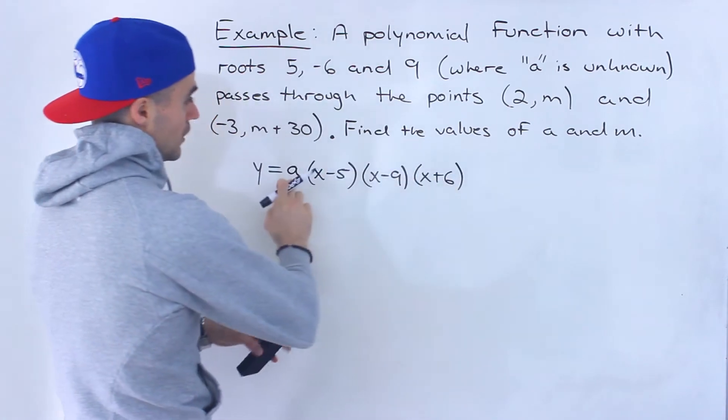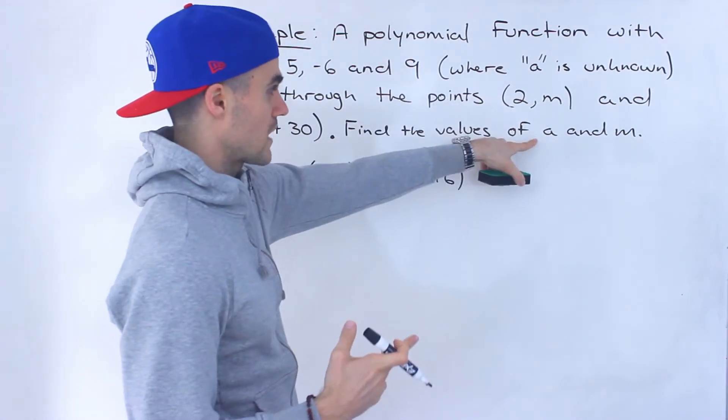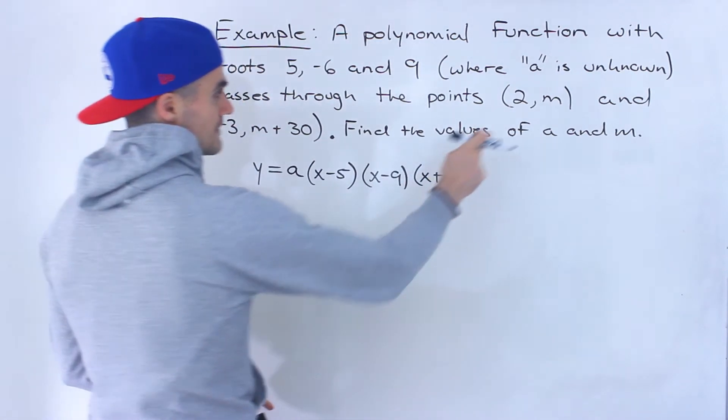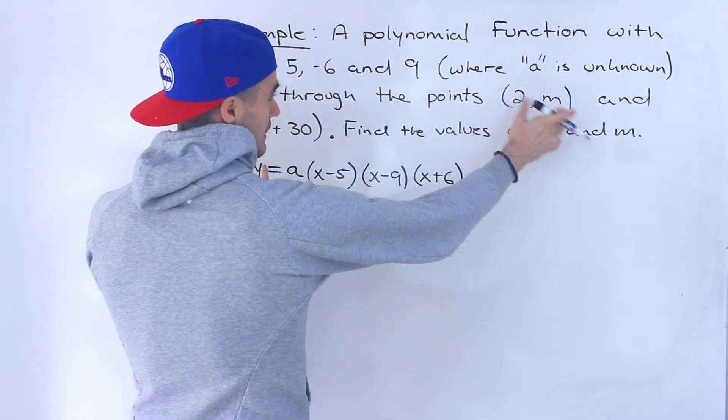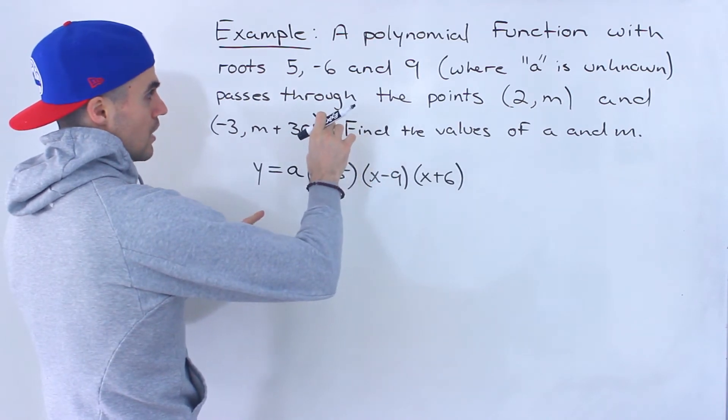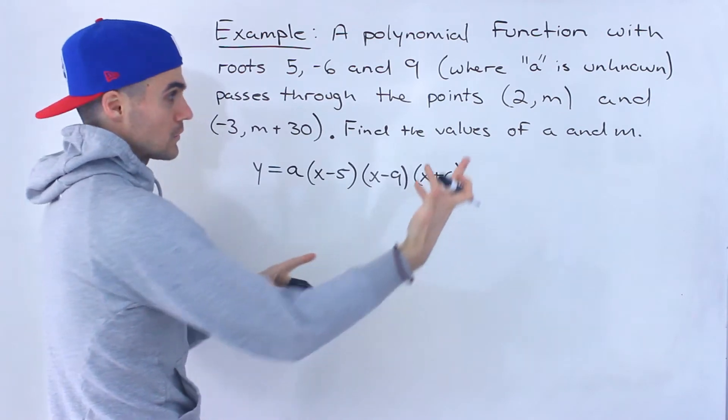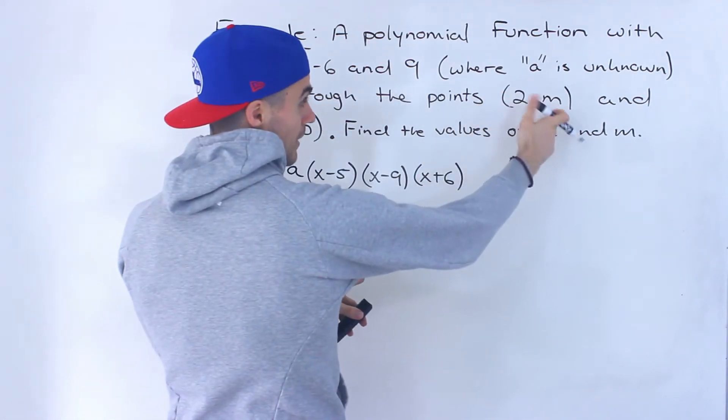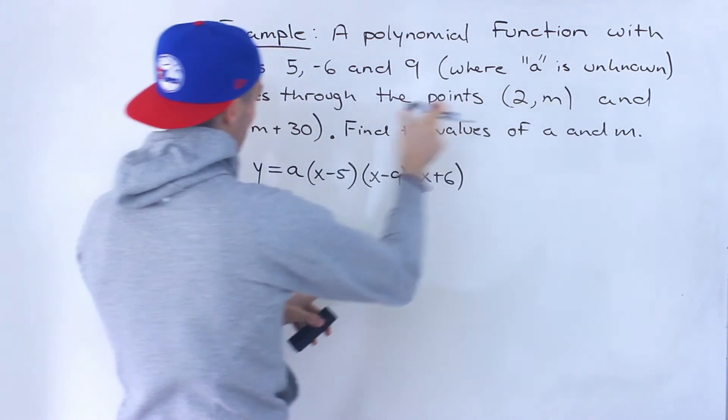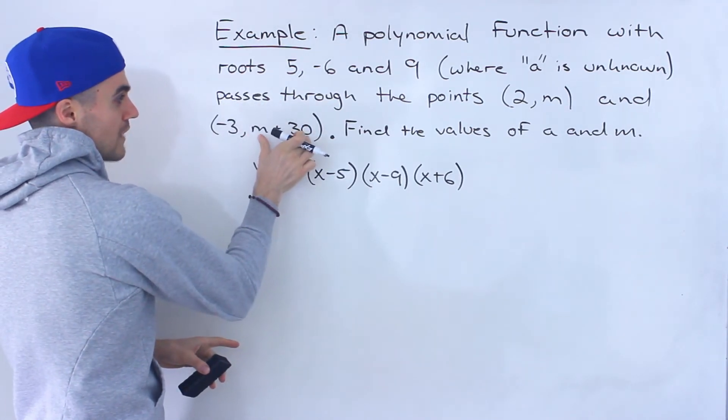So this is our polynomial here. We don't know what the A value is in front. It's unknown. That's one of the values we're actually finding. And we also have to find this M value. And notice that this M value is part of the representation of the two Y values for the two points we're working with. So we have this point (2, M), an x value of 2, a y value of M. And then we have this other point, an x value of negative 3, and a y value of M plus 30.